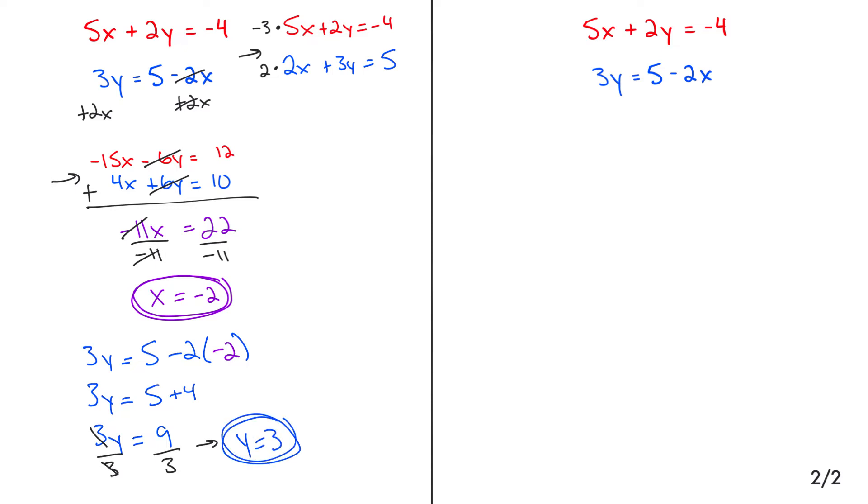If you leave your answer like this, you are not done. Because we need a coordinate. The coordinate is the x value comma the y value, and this is where those two lines would intersect each other. This is how we solve the system using elimination. I'm now going to do the exact same thing utilizing matrices. I'm going to need a little bit more space.